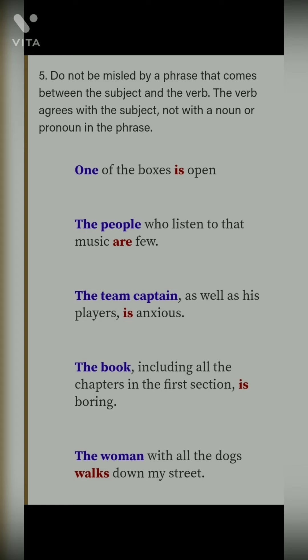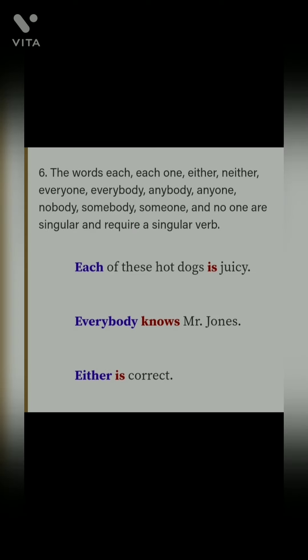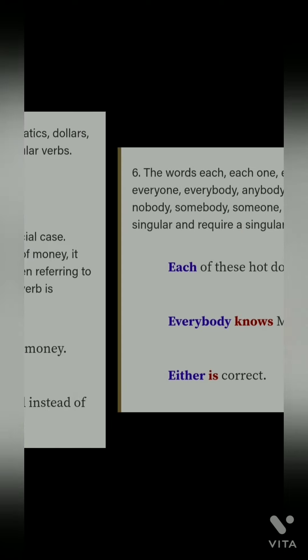Sixth point: the words each, each one, either, neither, everybody, anybody, anyone, everyone, nobody, somebody, someone, and no one are singular and require a singular verb. Ye jitne bhi saare hain, inke saath hamesha singular verb hi lagani hai. For example: 'each of these hot dogs is juicy'; 'everybody knows Mr. Johns'; 'either is correct' — singular.